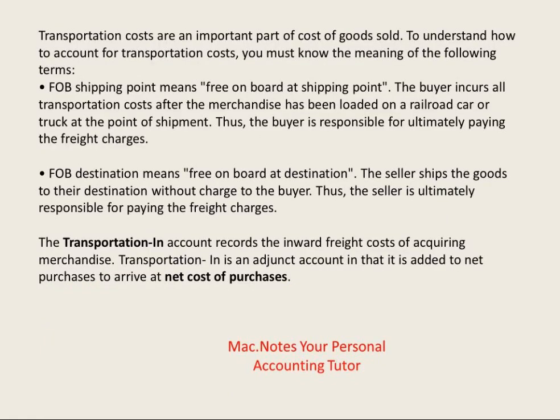One more thing: transportation costs are an important part of the cost of goods sold. It depends on when legal ownership transfers from seller to buyer, as stated in the invoice. Free on board (FOB) shipping point means the seller places goods on their shipping dock, so the buyer incurs the transportation costs to get the merchandise. On the other hand, FOB destination means the seller pays shipping to deliver to my business — though they've built that cost into the invoice. If it's FOB shipping point, we must add the freight costs to the cost of acquiring the merchandise.